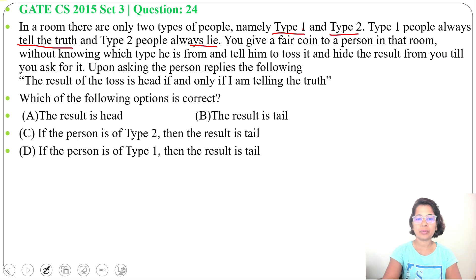So Type 1 always tells the truth, Type 2 always tells the lie. You give a fair coin to a person in that room without knowing which type he is from and tell him to toss it and hide the result from you till you ask for it. Upon asking, the person replies the following: the result of the toss is head if and only if I am telling the truth.